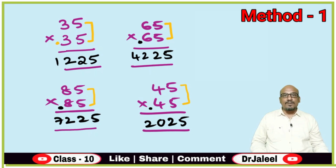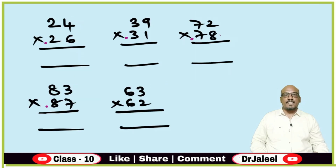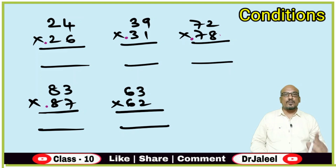Now the big doubt is: can we use this method for numbers which do not end with 5? Yes, we can use this method, but there are some conditions to be followed. Let us observe these examples. There are two conditions needed to follow this method.